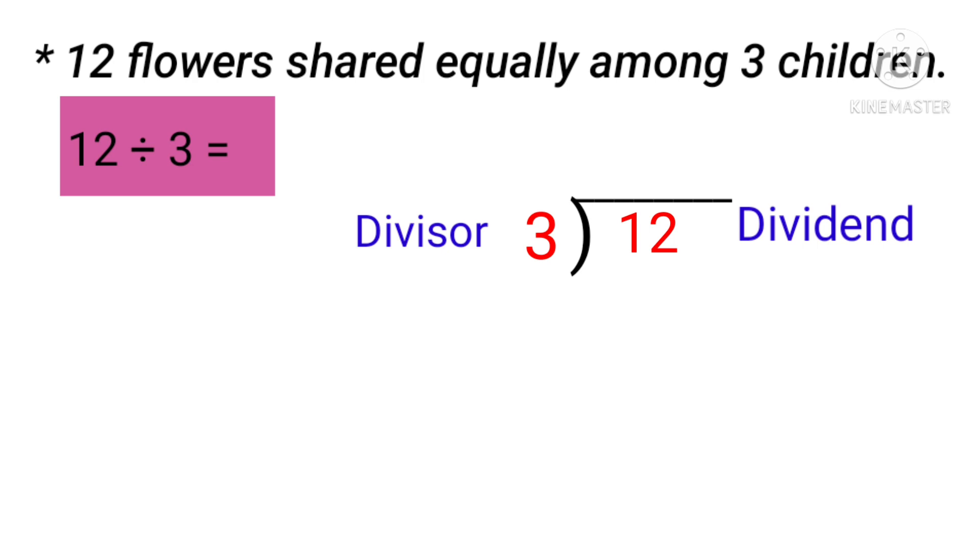So we will divide 12 by 3. Students, we will say the 3 times table is a divisor till we get the product 12. Let's say: 3 ones are 3, 3 twos are 6, 3 threes are 9, and 3 fours are 12. Yes, we get the answer 3 fours are 12.